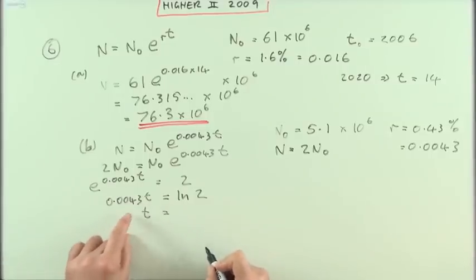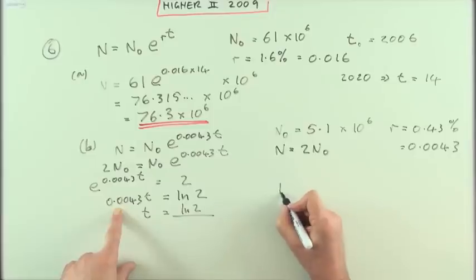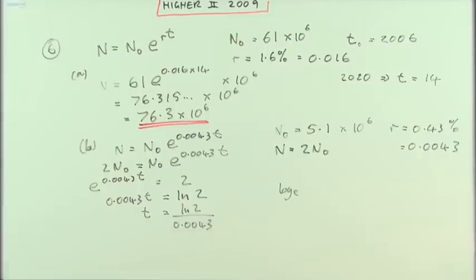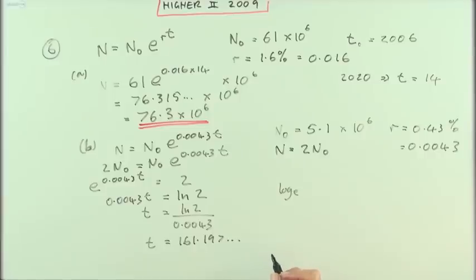Finally, how can I get t? Divide ln of 2 natural logarithm of 2 you can write log base e if you like divided by 0.0043. And you get 161.197 and so on. So rounding off approximately 161.2 years to double.